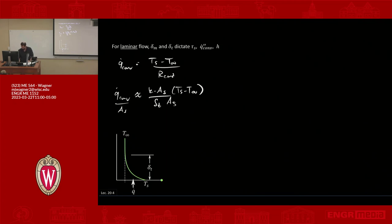I'm left with Q̇ double prime convection approximately equal to K over ΔT times Ts minus T infinity. And from this I can make the conclusion that this thing here is approximately equal to H, my convective heat transfer coefficient.